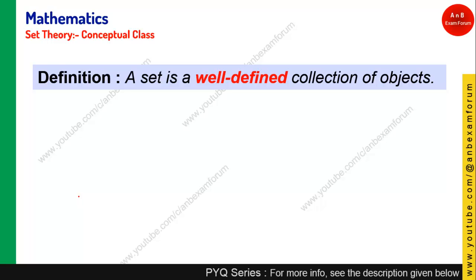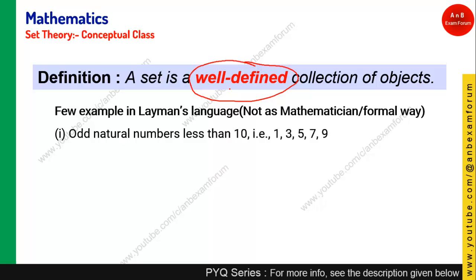Coming to the definition of a set: remember, a set is a well-defined collection of objects. It is not just a collection of objects — it must be well-defined. For example, if somebody asks you for the set of odd natural numbers less than 10, you will get {1, 3, 5, 7, 9}. It is well-defined because any number either belongs to this set or it does not — there are two options, 1 or 0, and there is no ambiguity.